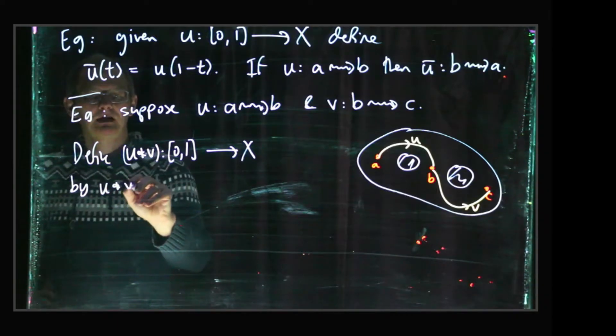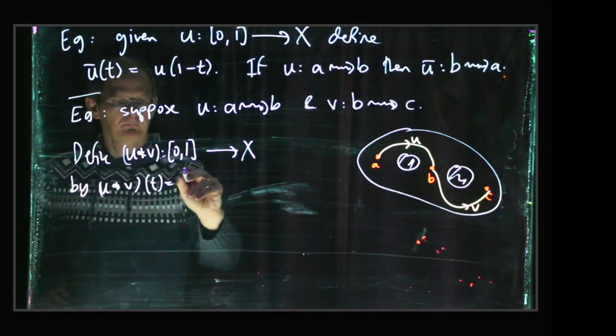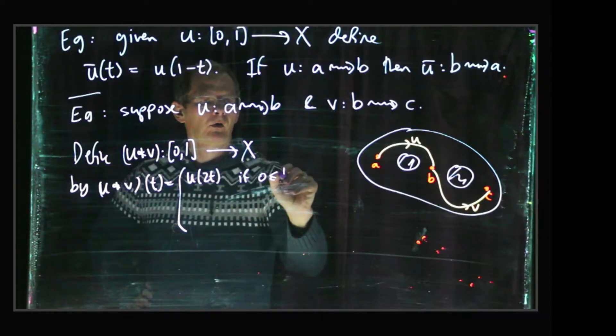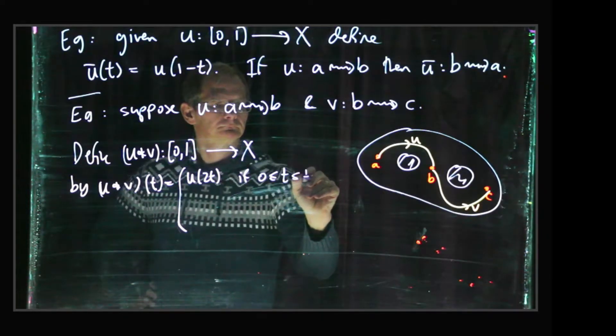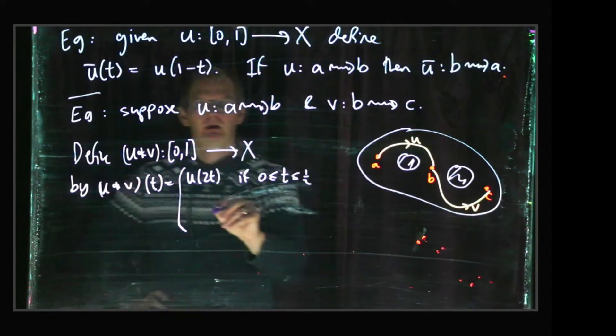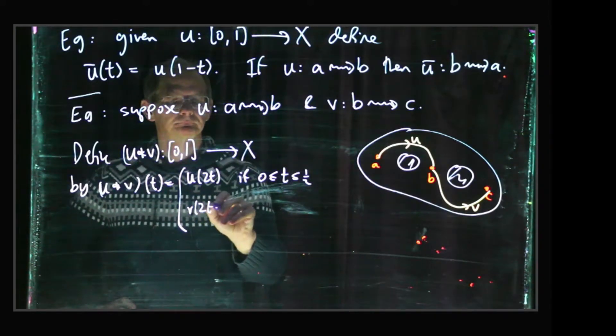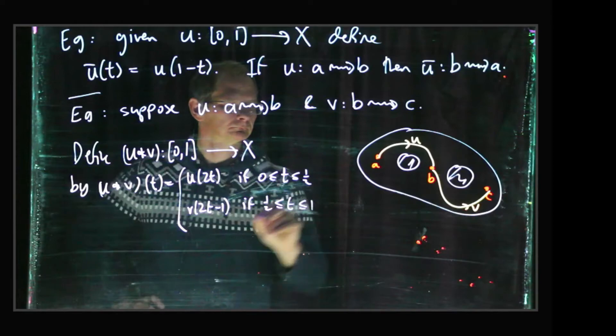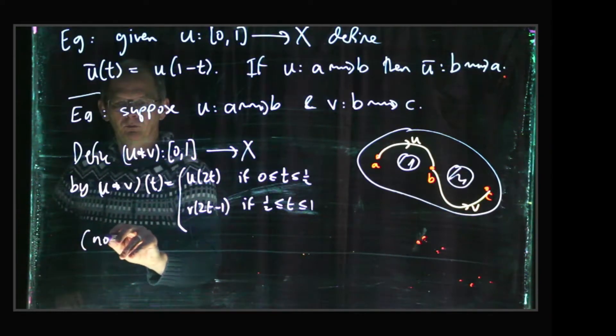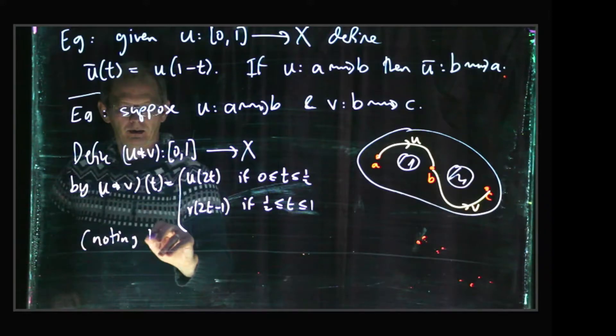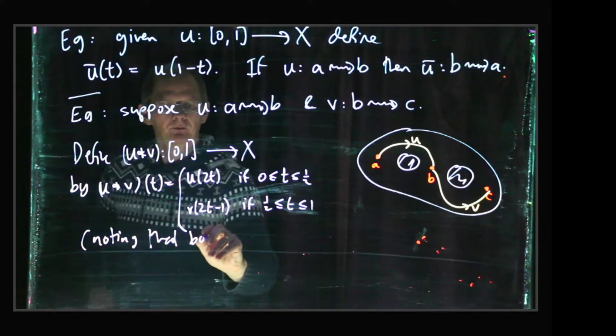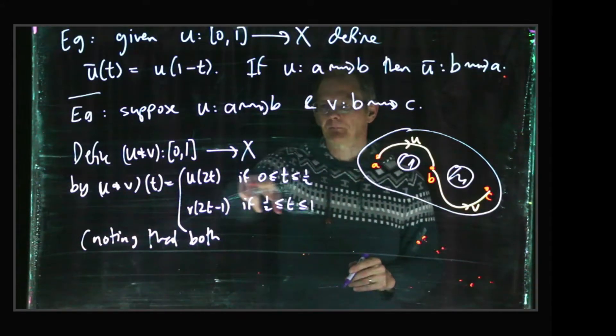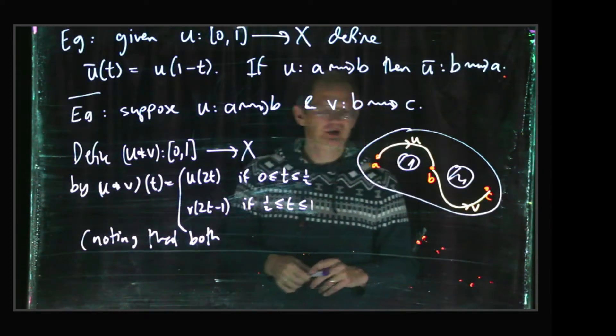So u star v of t, it's going to be u of 2t if t is between 0 and a half, and v of 2t minus 1. So there's a potential problem with this definition that, you know, we've got these two different clauses and they're both in operation when t is a half, so we need to check what happens when t is a half.